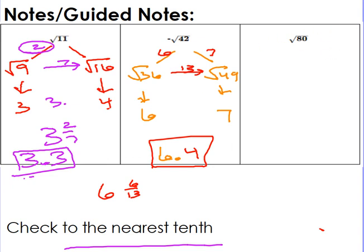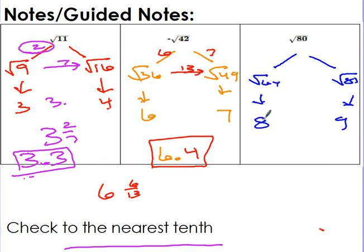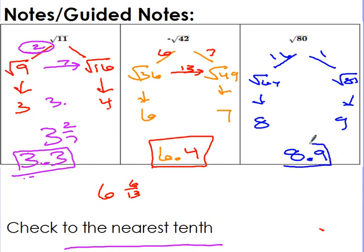Try the square root of 80 on your own — pause it and go. The square root of 80 is between the square root of 64 (which is 8) and the square root of 81 (which is 9). Isn't 80 really really close to 81? It's only 1 away from 81 but 16 away from 64. So the best and most accurate estimation to the nearest tenth is 8.9.